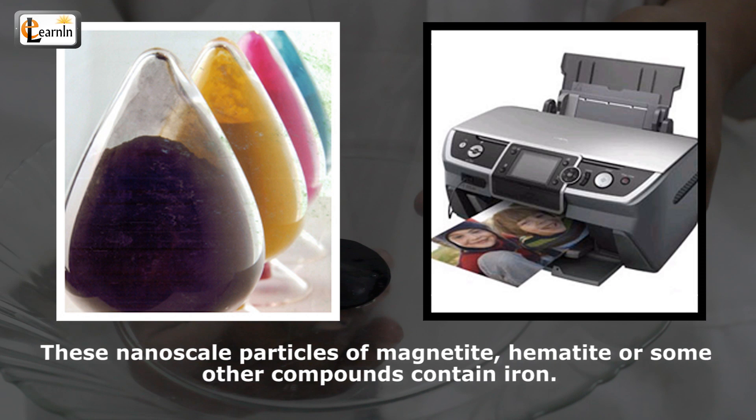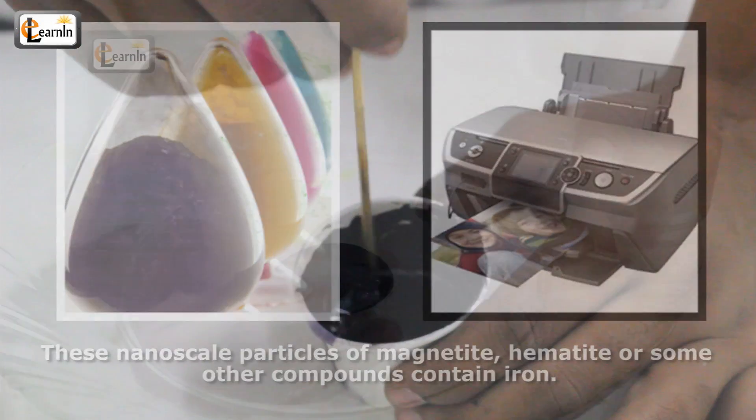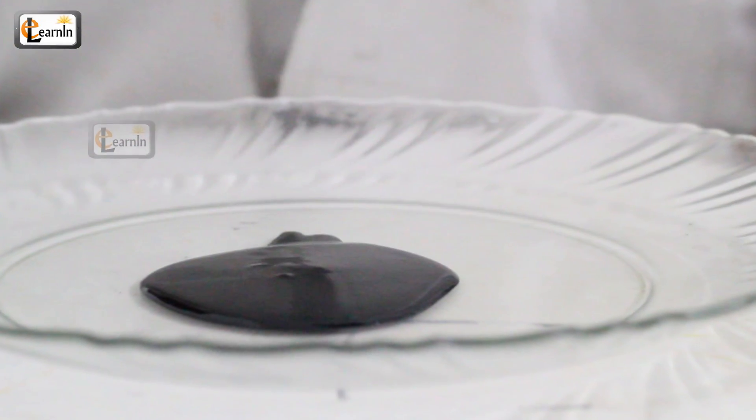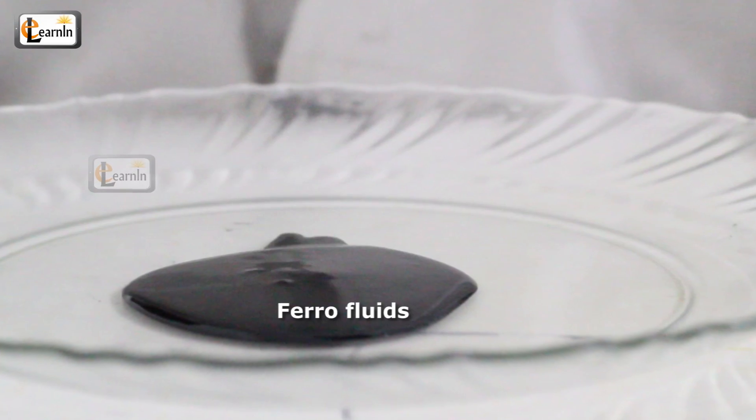these nanoscale particles of magnetite, hematite, or some other compounds contain iron. So when this powder is mixed in oil, it acts as a liquid magnet. Liquid magnets are also known as ferrofluids.